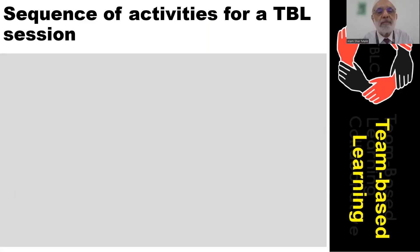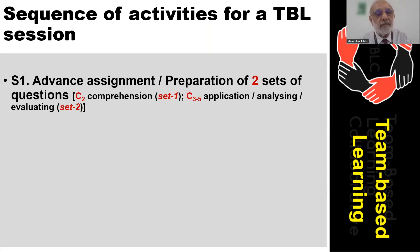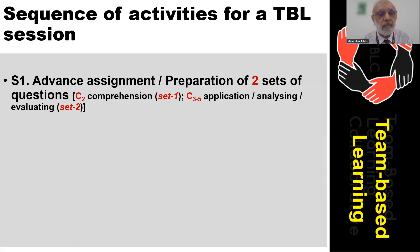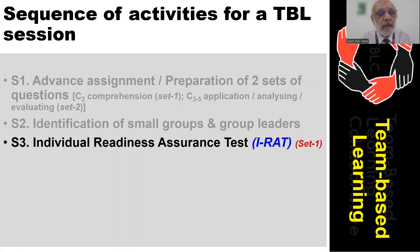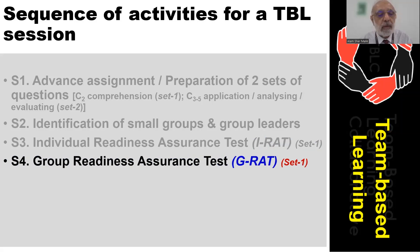Here is a list of the sequence of activities for a TBL session. Step one: advanced assignment for students and preparation of two sets of questions by the lecturer — the first set at the comprehension level and the second set at the application and evaluation level, following Bloom's taxonomy. Step two: identification of small groups and group leaders. Step three: individual readiness assurance test using set one. Step four: group readiness assurance test using the same set of questions.